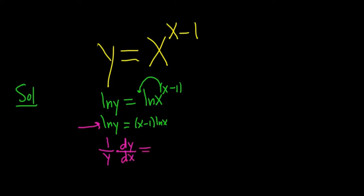And then here we can use the product rule. So the derivative of the first piece is simply 1 times the second, which is ln x, plus the first, so x minus 1, times the derivative of ln x, which is 1 over x.